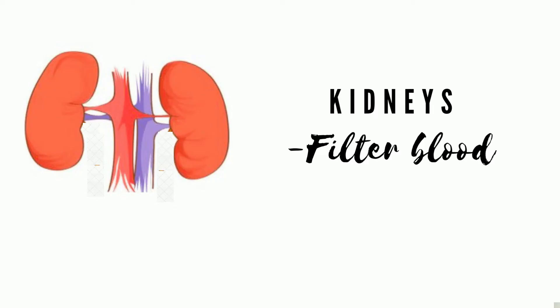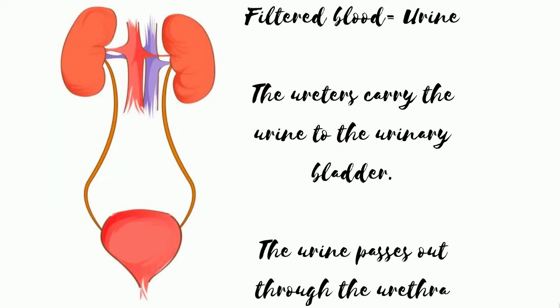The main organs of the excretory system are the kidneys. The function of the kidneys is to filter blood. The filtered waste from the blood becomes urine. The ureters carry the urine to the urinary bladder. The bladder stores the urine. When the bladder is full, the urine passes out of the body through the urethra.